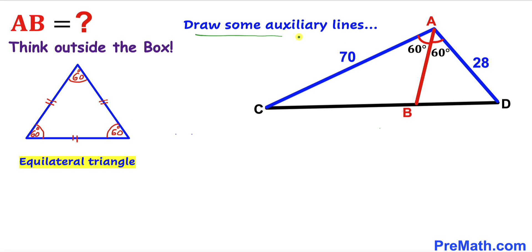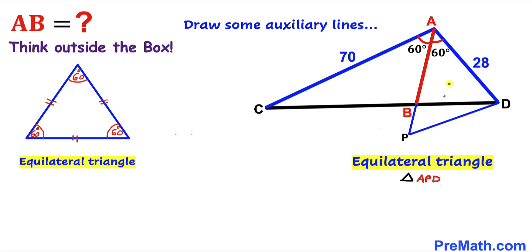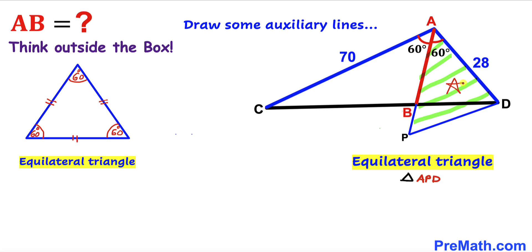So we are going to draw some auxiliary lines. I have drawn equilateral triangle APD by extending line AB all the way to point P and then connecting point P with vertex D. Since we are dealing with equilateral triangle APD, all side lengths are congruent — if AD is 28, then AP is 28 and PD is 28 as well. All interior angles are 60 degrees each.